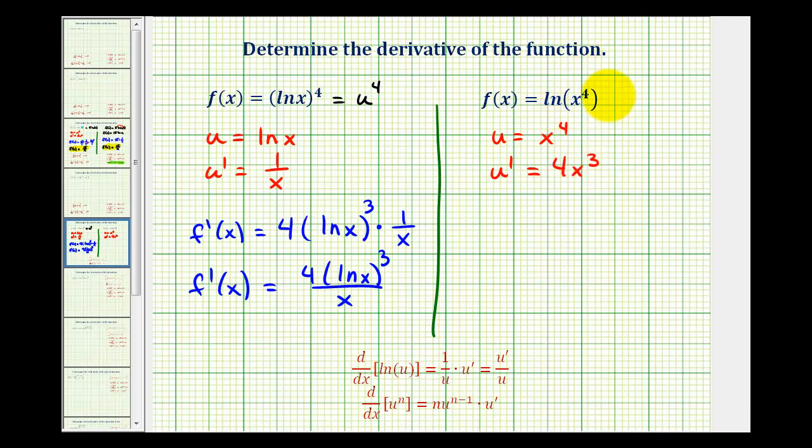So when we write this in terms of u, it's going to be natural log u. So now we'll differentiate natural log u with respect to x, and the formula is here. So we'll have f prime of x is equal to one over u times u prime, which will be one over x to the fourth times four x to the third.